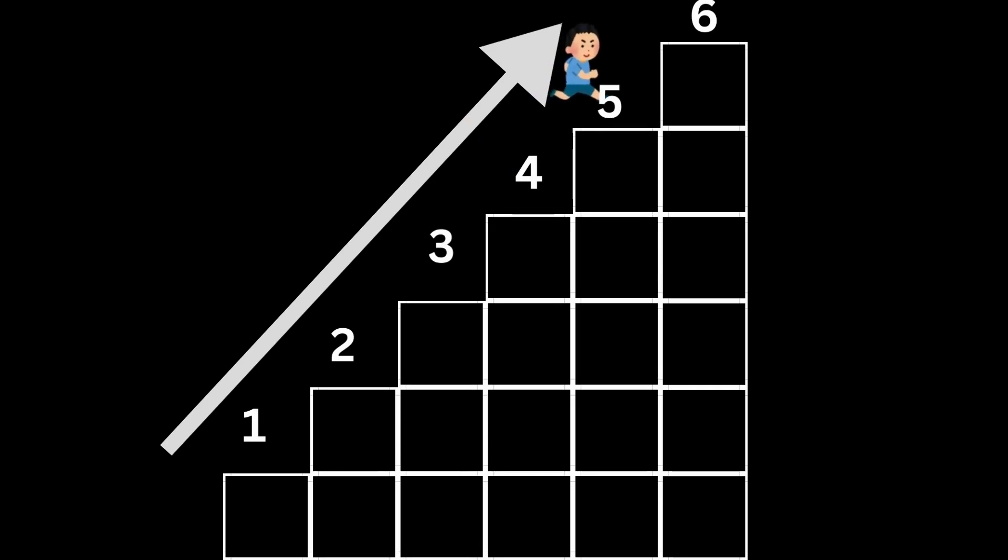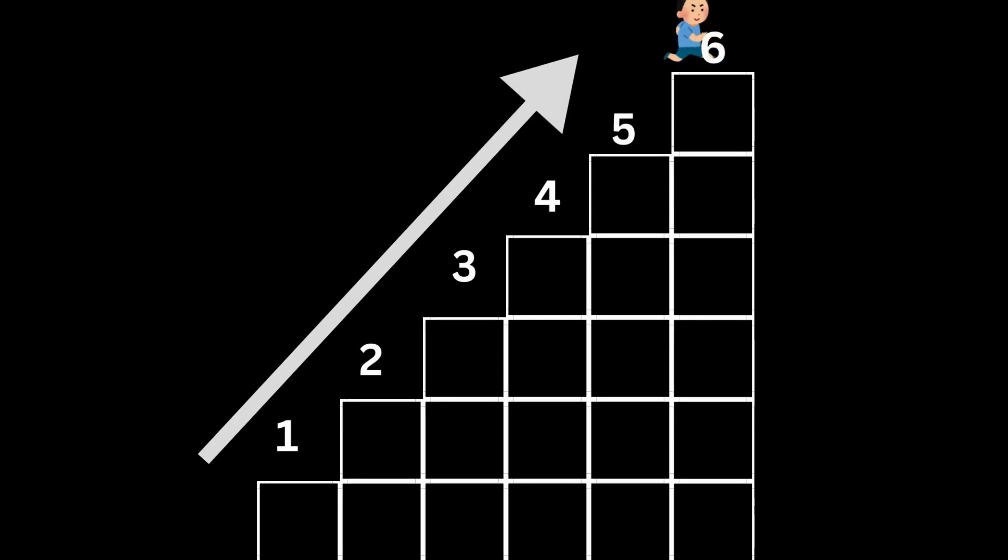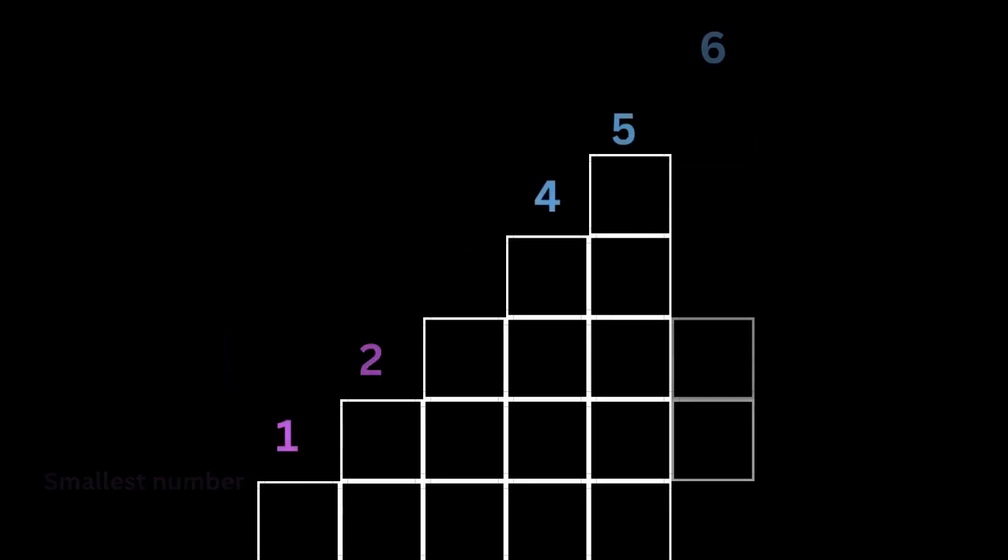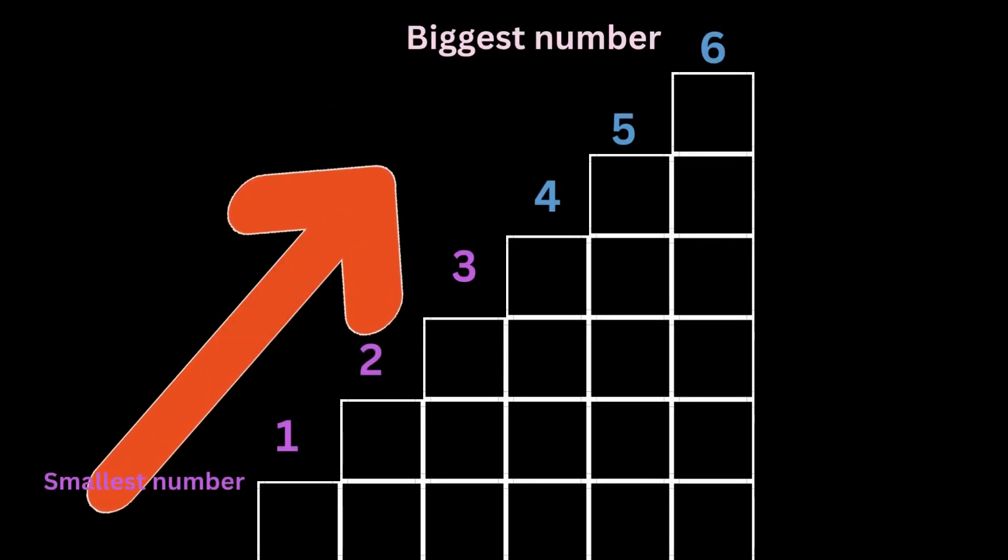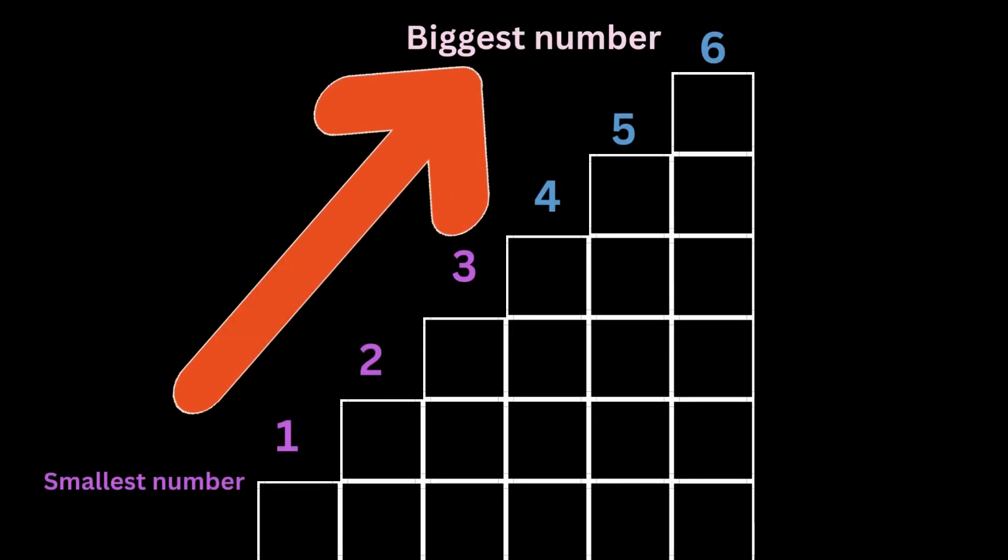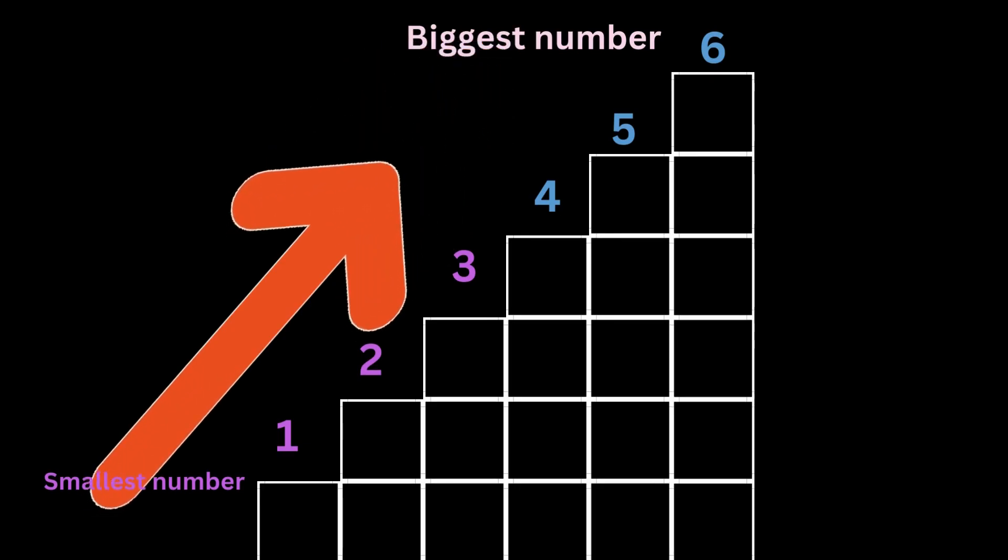Then you take the fifth step, labeled 5. You continue climbing, taking each step in order until you reach the top. So climbing a staircase in ascending order means going from the lowest step to the highest step as in 1, 2, 3, 4, 5, 6, and so on.